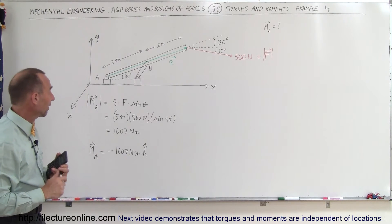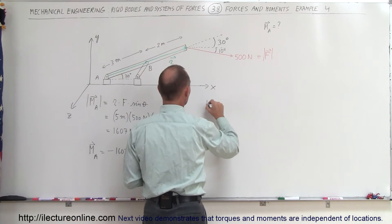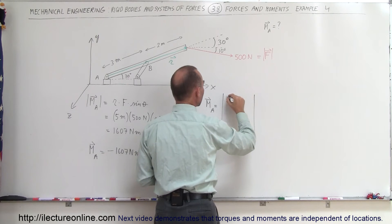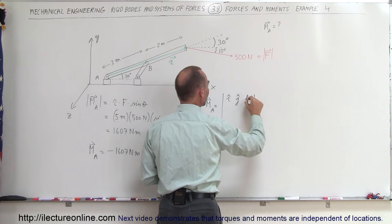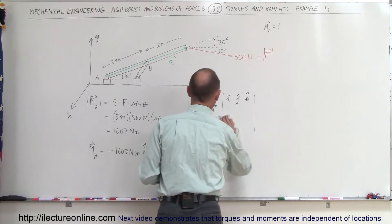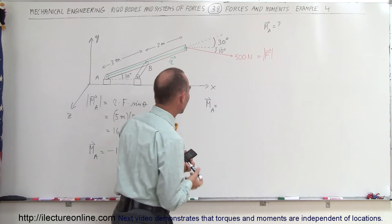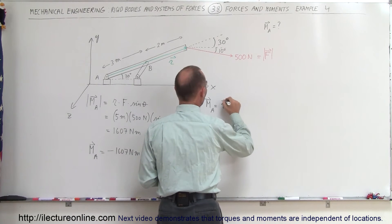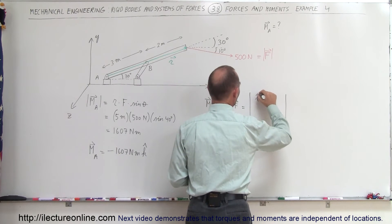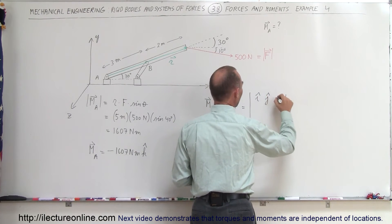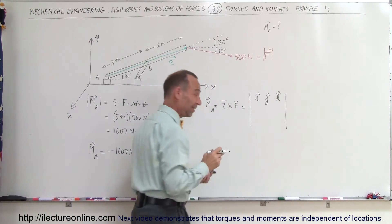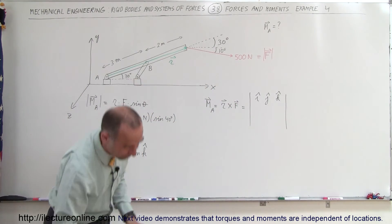Now what we can also do is find the moment as follows. The moment about point A is equal to the result of the solution of this matrix, which is simply the vector product — so it's equal to R cross F. We set up the I, J, K matrix and put the components of the R vector and the components of the F vector in, which means we have to find the components first.